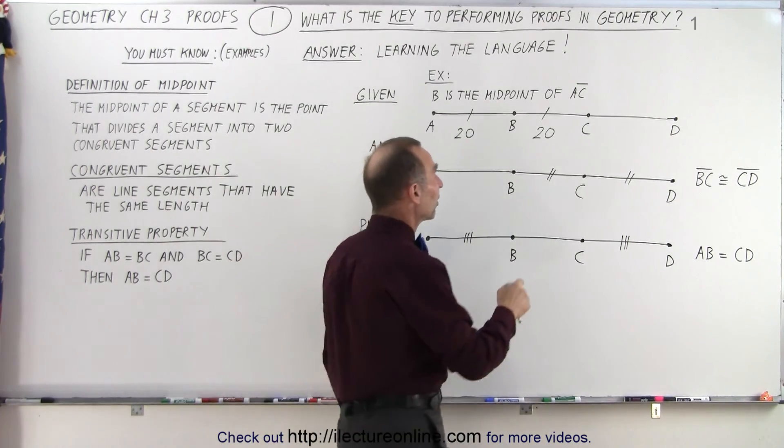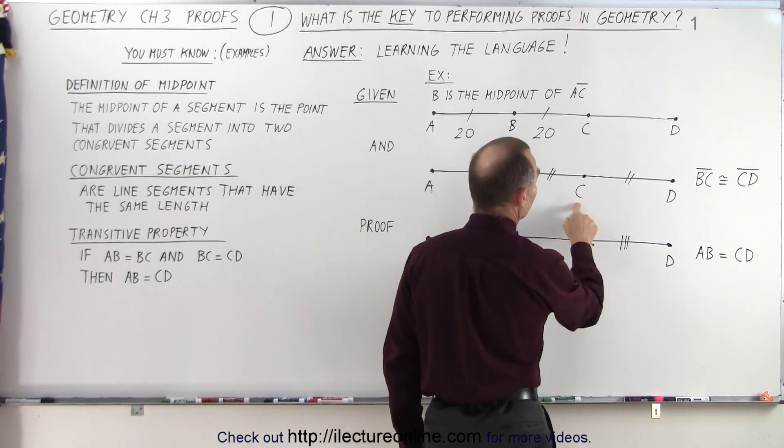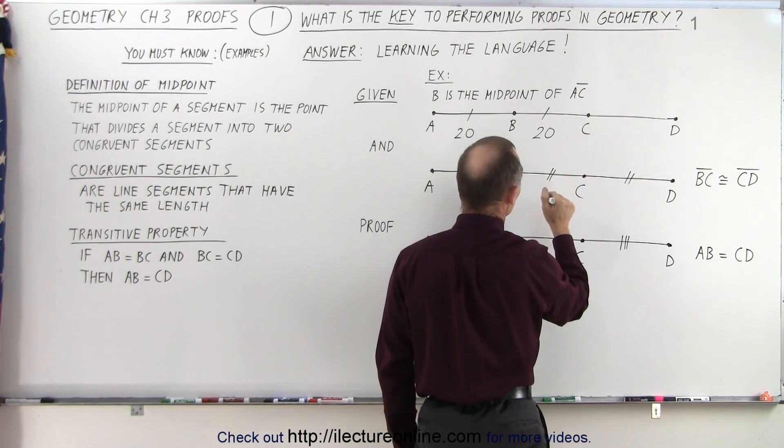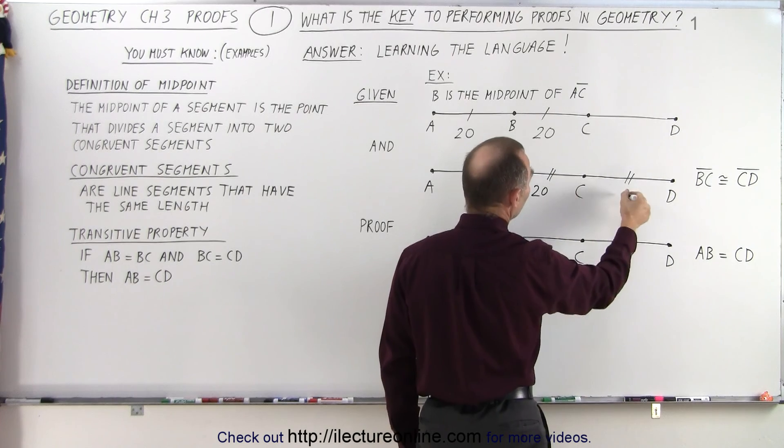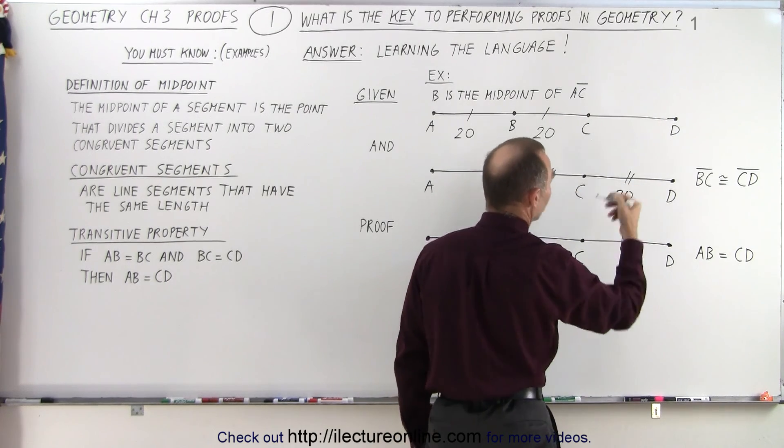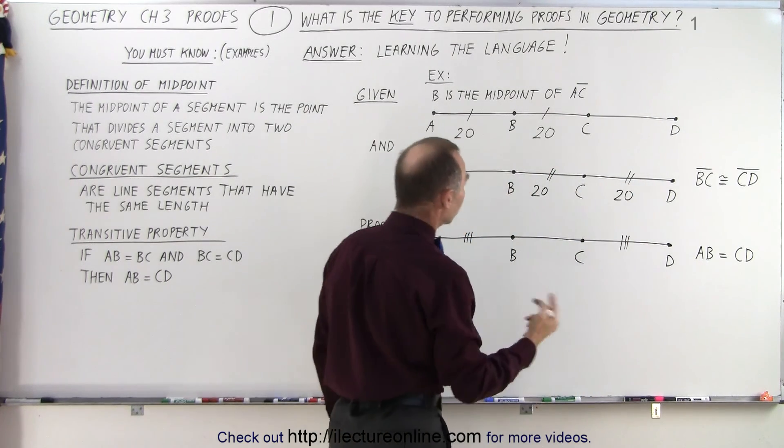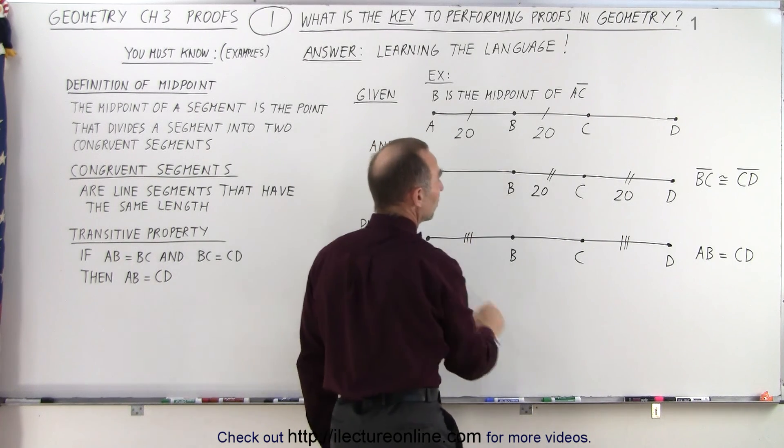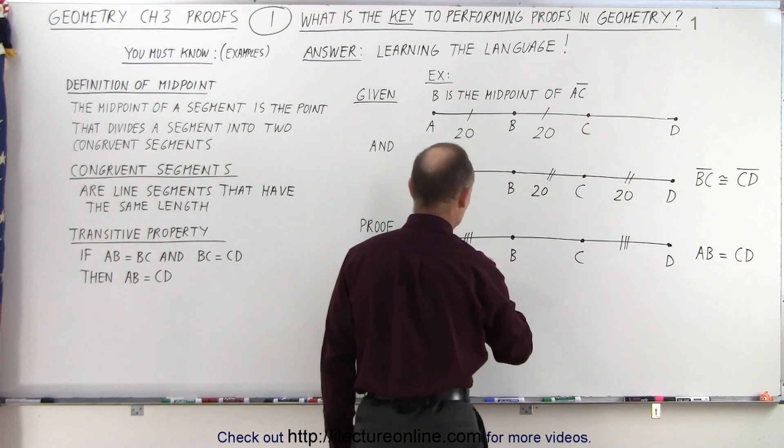And then if they tell us that line segment BC is congruent to line segment CD, in other words they must have the same length. If this one is equal to 20, then of course this must be equal to 20 as well, because they're the same. And then you can clearly see that the line segment from AB, which is equal to 20, must equal the line segment from CD, which is equal to 20.